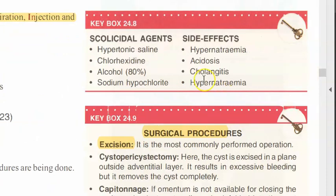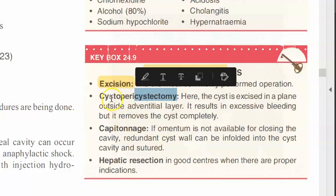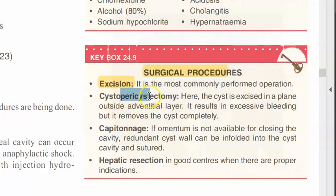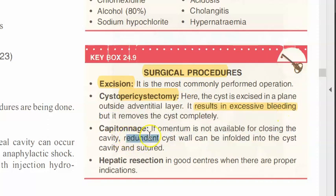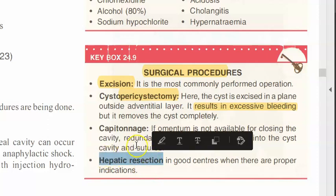Other surgeries mentioned include excision, and cystopericystectomy — removing the cyst along with the pericyst. Pericystectomy removes the adventitial layer, which results in excessive bleeding but removes the cyst completely. Capitonage is done when omentum is not available to close the cavity — redundant cyst wall is infolded into the cyst cavity and sutured. Hepatic resection means removing part of the liver itself.